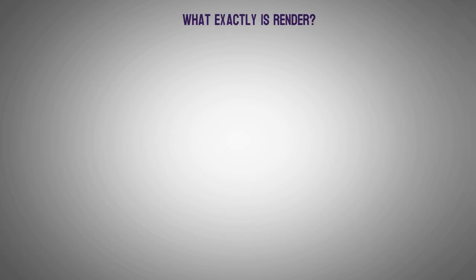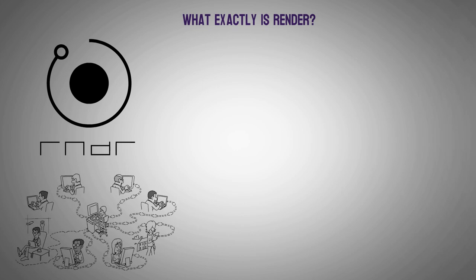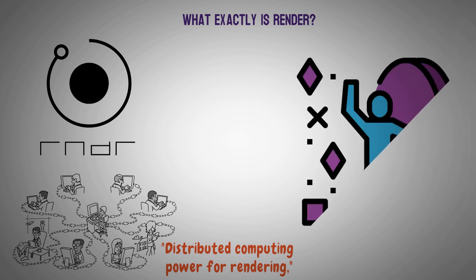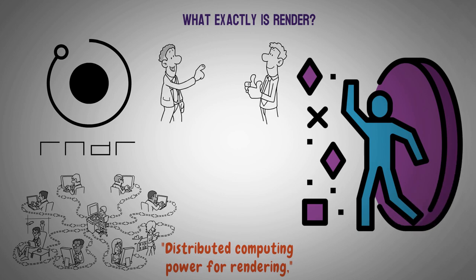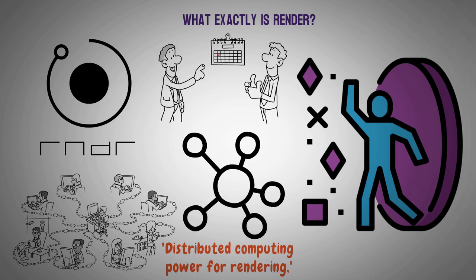What exactly is Render? Render Token is an Ethereum token that fuels the Render Network. The Render Network is a distributed rendering network, which basically means that Render provides distributed computing power on which graphics can be rendered live. In practice, for example, Render could be important in the success of the Metaverse. When many people are in such a digital world at the same time, a huge amount of computing power is needed to make it all run smoothly. The Render Network provides all of this in a distributed, decentralized way.